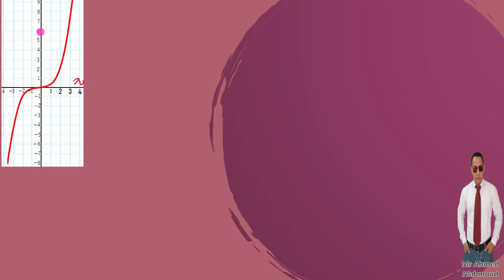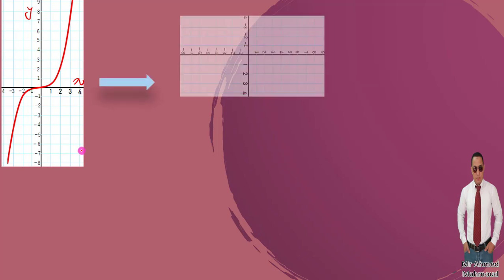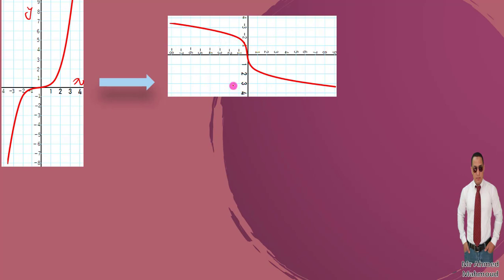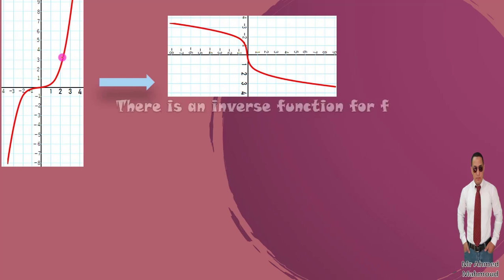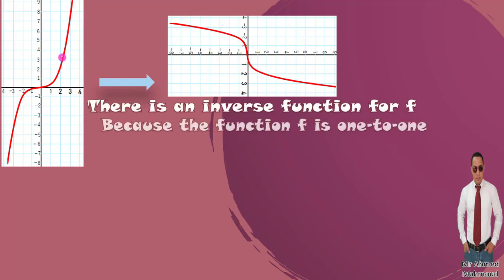The inverse function shape is obtained by swapping X and Y. If we apply the vertical line test to the new shape and it still passes as a function, then there is an inverse function for f. The reason: the function f is one-to-one. So if the function is one-to-one, it can have an inverse function.